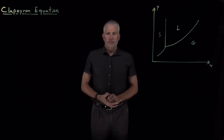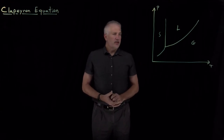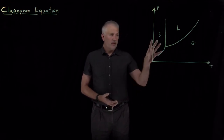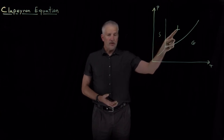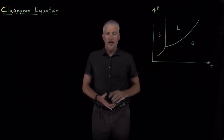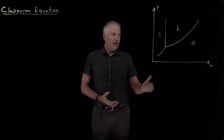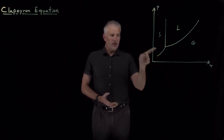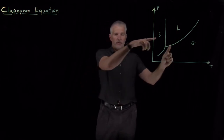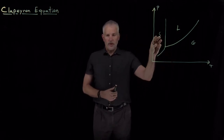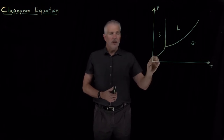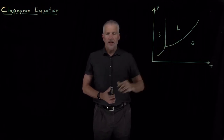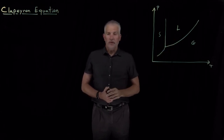A phase diagram actually tells us several important things. Quite obviously, it tells us where the solid versus liquid versus gas phases are more stable. If you know what temperature and pressure you're at, you can read off the phase diagram and determine whether you're in the solid, liquid, or gas phase, or whether you're at some coexistence line where more than one phase is coexisting at the same time.